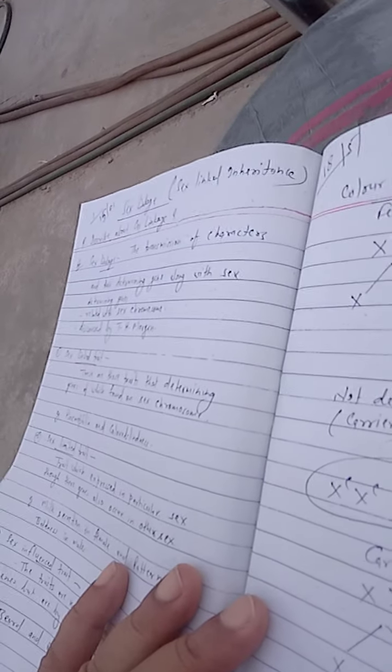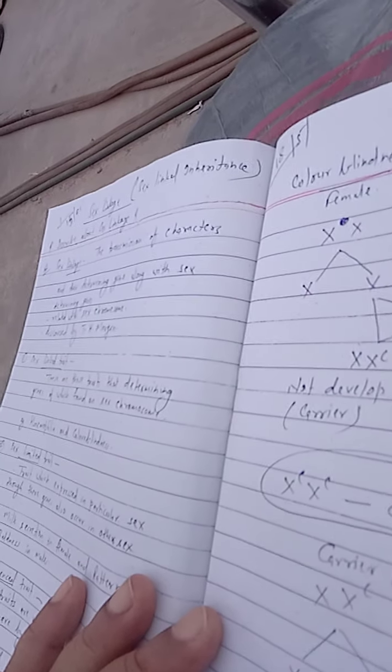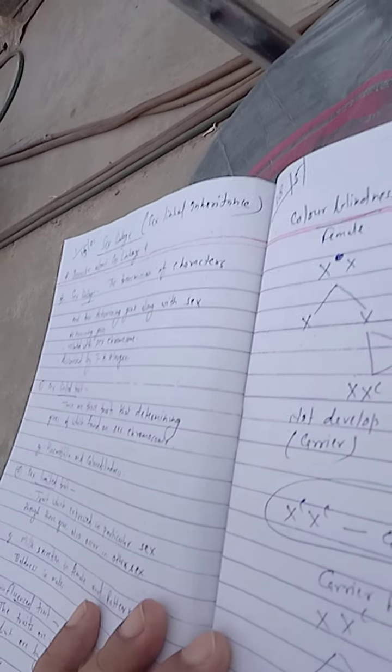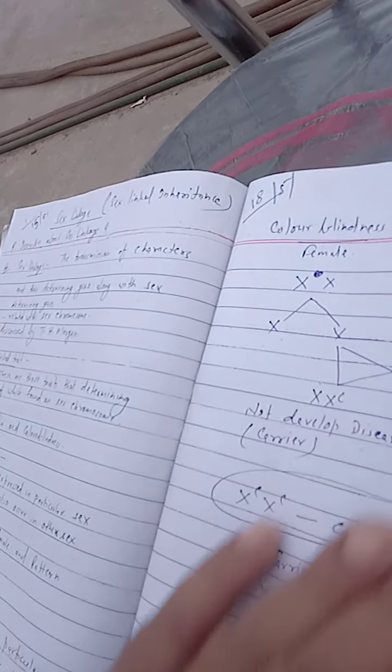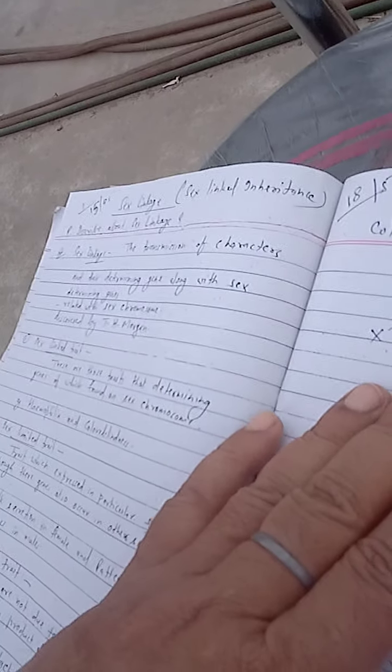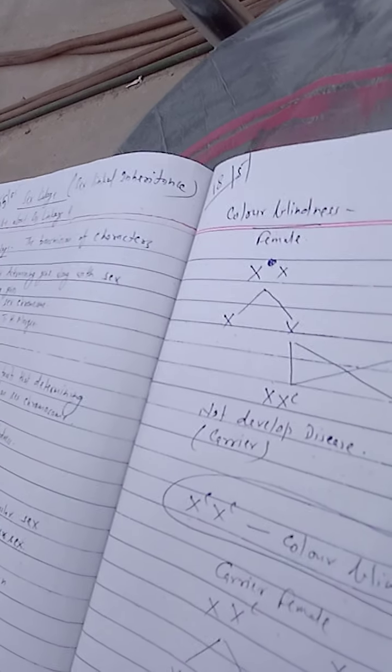Sex-linked traits are those traits whose determining genes are found on sex chromosomes. Examples are hemophilia and color blindness. Here we see a cross between a normal female and a color blind male. The gene for color blindness is situated on the X chromosome.